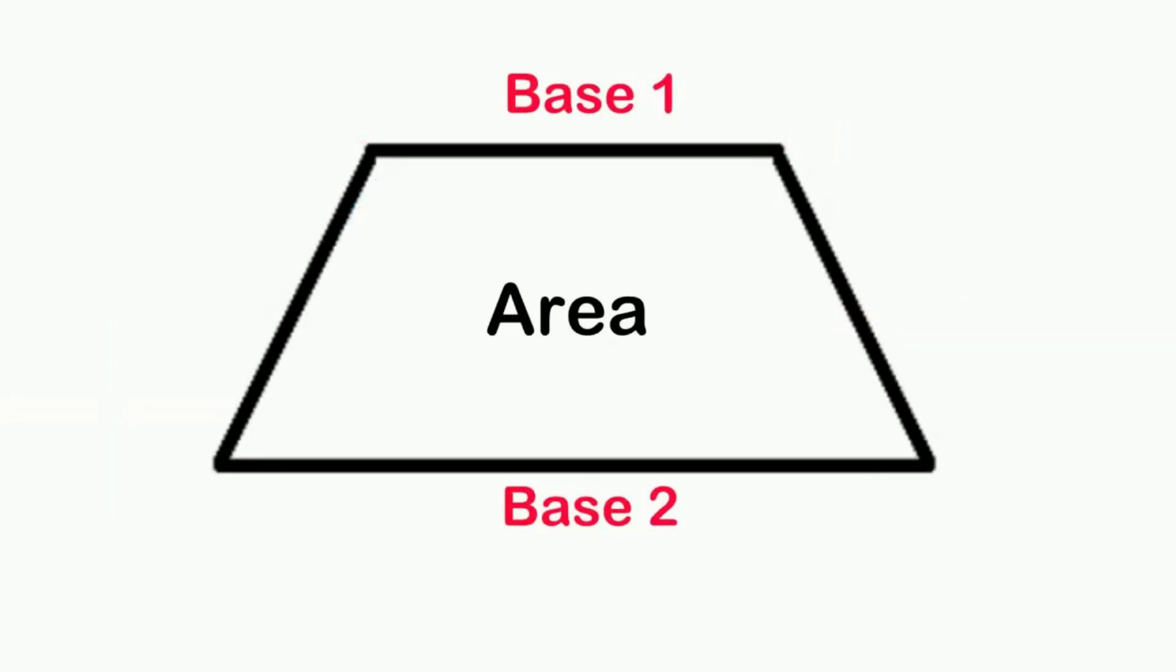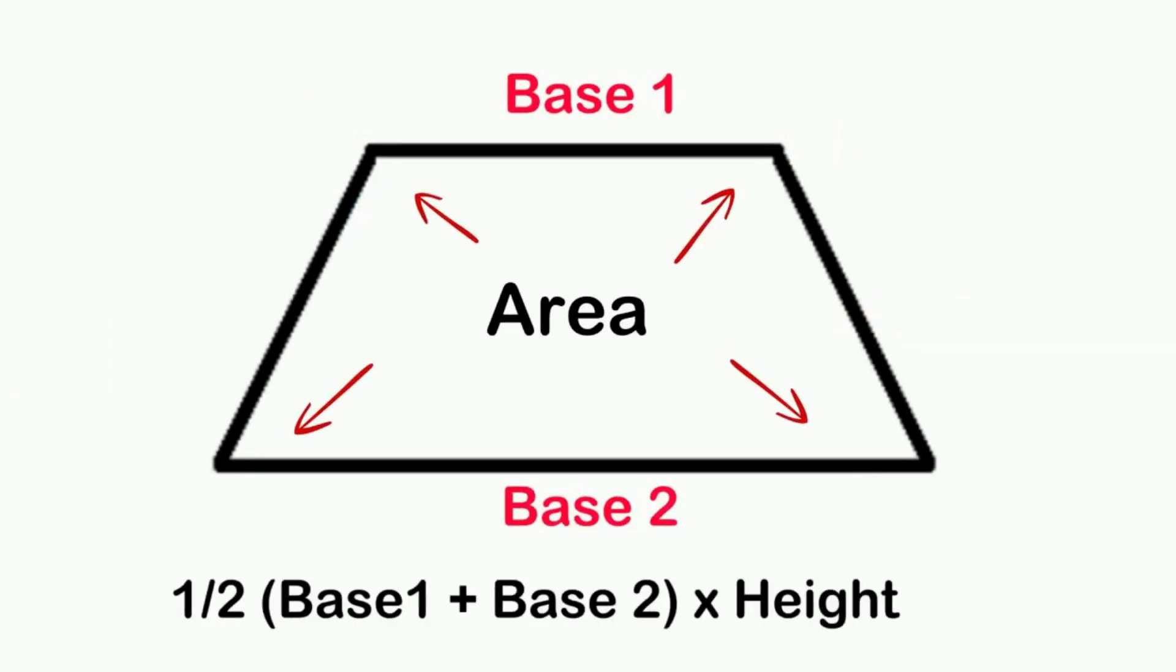You can find the area of a trapezoid by taking one half times base one plus base two, times the height. The height is not the side length, but a line that is perpendicular to the base. This is important.